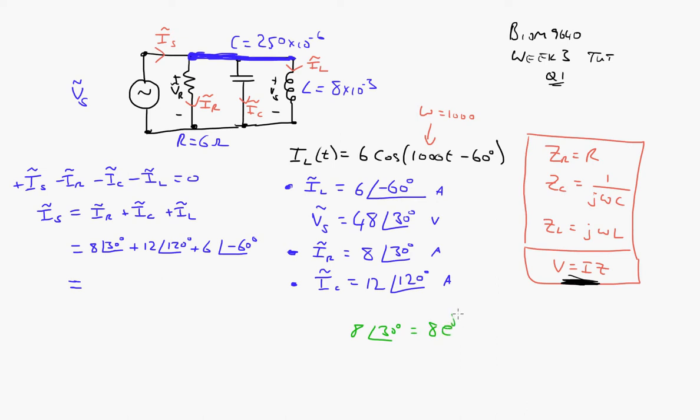And if you remember Euler's formula, that's 8 cosine of 30 degrees, plus j, 8j sine... Let's do that again. It's a bit messy. Plus j, 8 sine of 30 degrees.